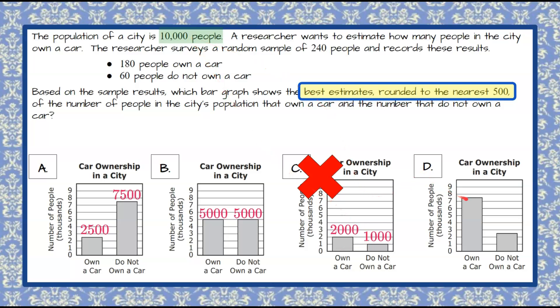Now let's look at bar graph D. Here we're at 7.5 or 7,500 and over here we're at 2,500 and the sum of these two bars is indeed 10,000. So we've eliminated one of our answer choices.